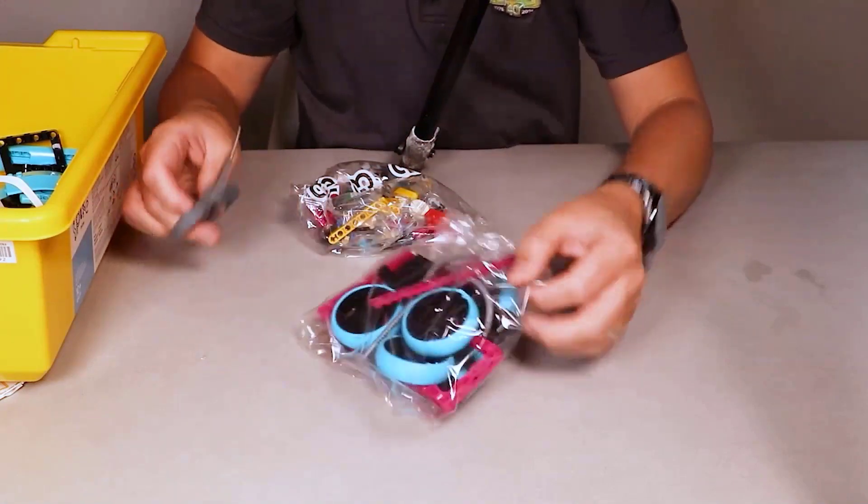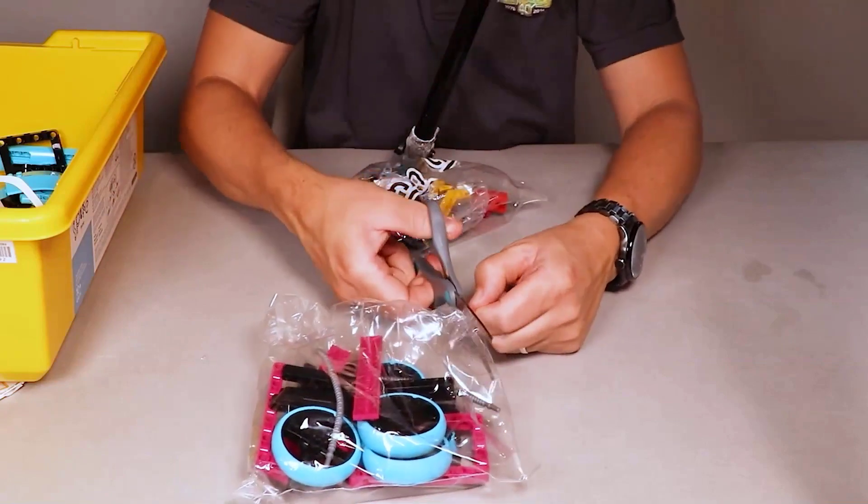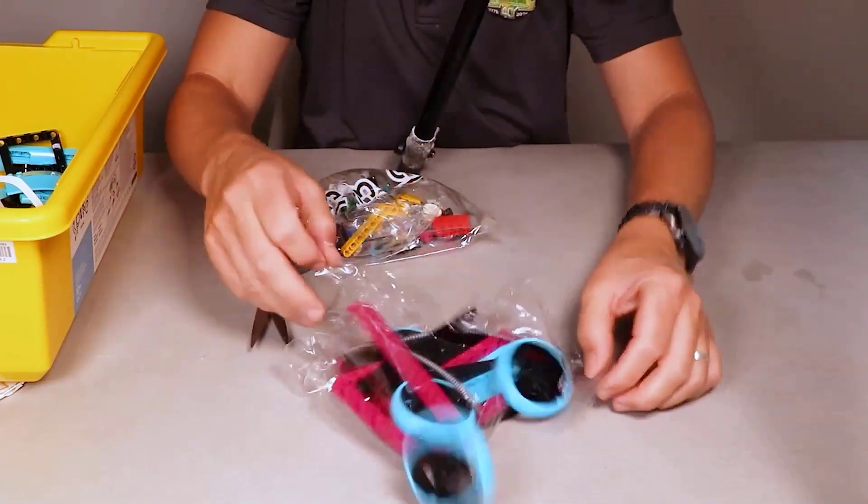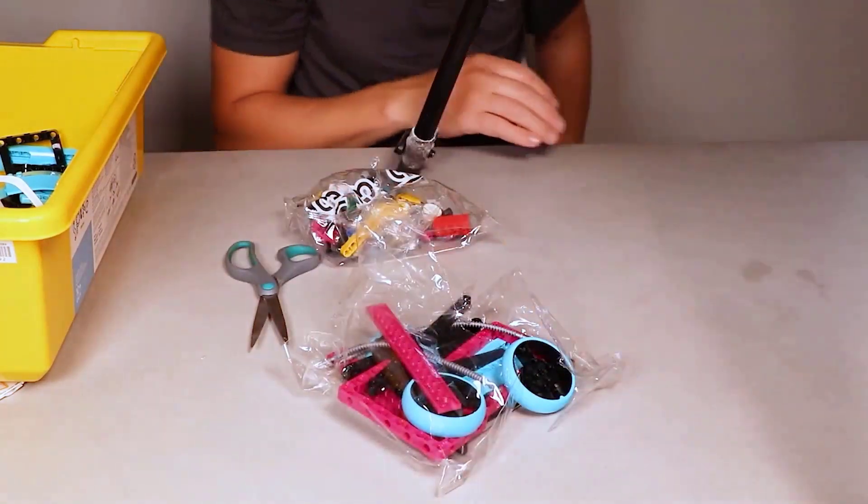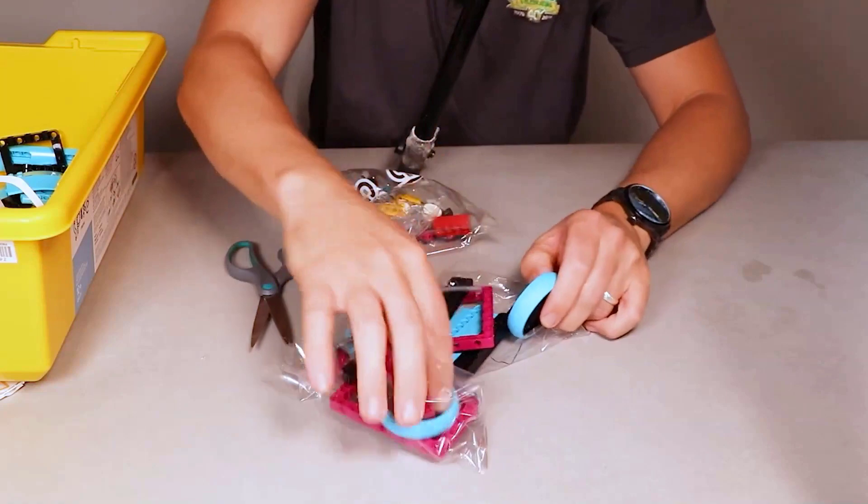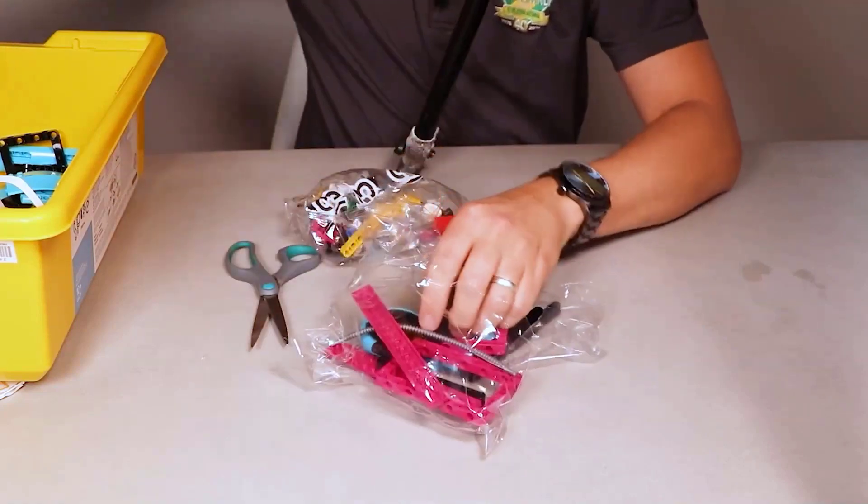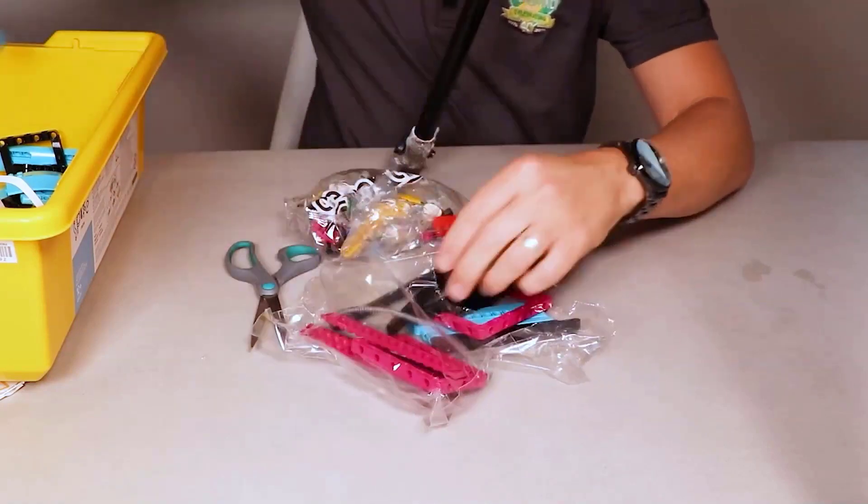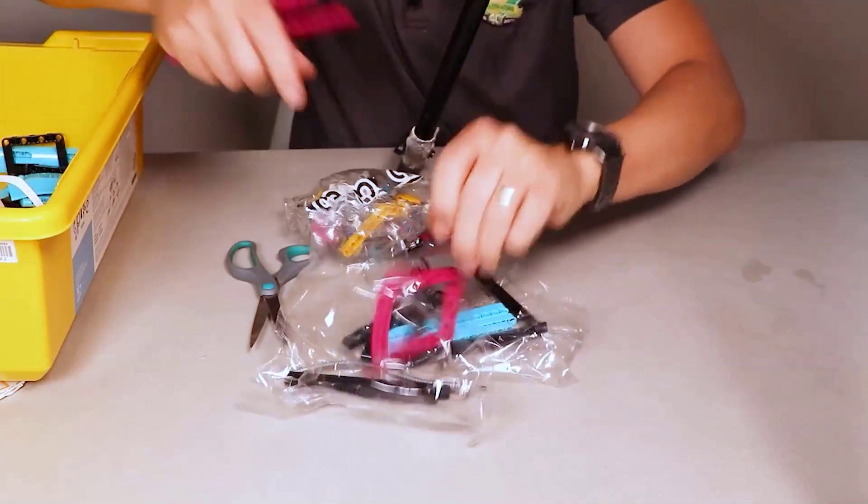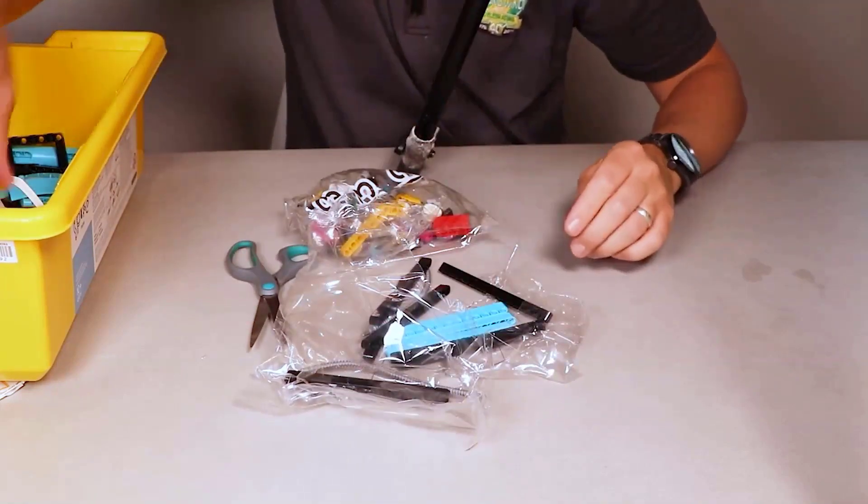And then some more pieces. These are not all going to go into the bottom of the tub. We are going to cut this bag open and we'll be sorting this one out just a little bit with the wheels going down into the bottom of our yellow tub.